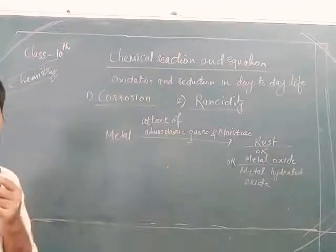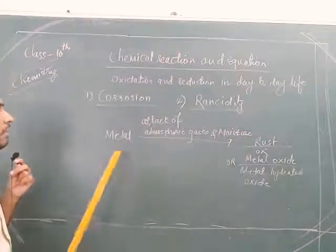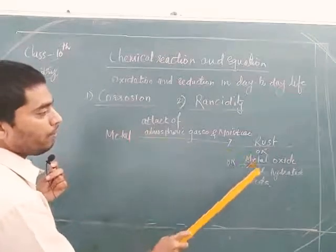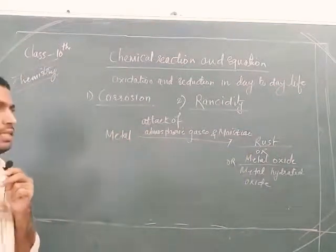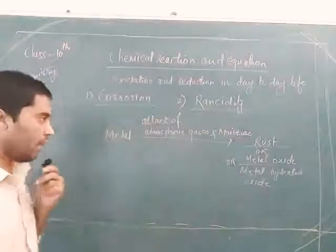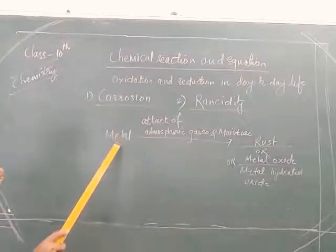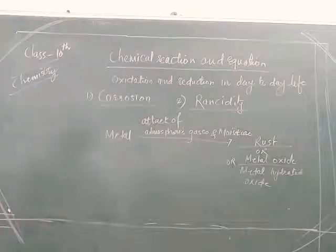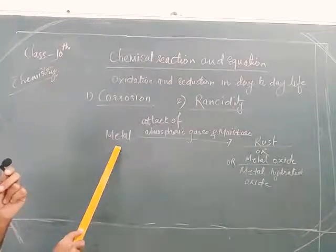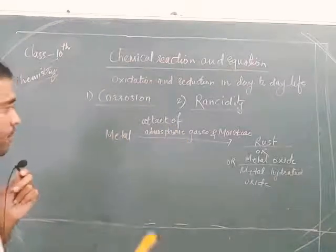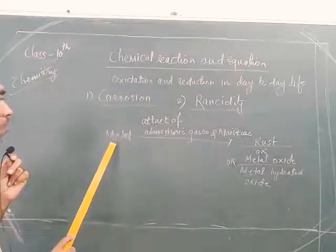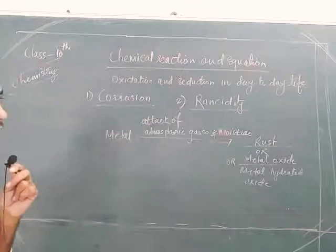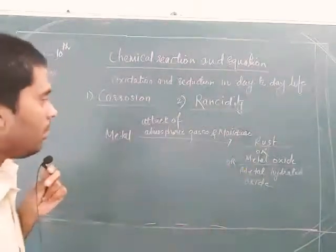If these two conditions are not satisfied, corrosion will not take place. After the attack of atmospheric gases and moisture, the metal converts into metallic oxide — it loses its original state and converts into another compound. We can say the metal is slowly being consumed to form its respective oxide or hydrated oxide. The process of slowly eating up the metal due to atmospheric gases and moisture to produce rust is called corrosion.